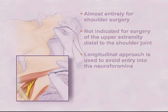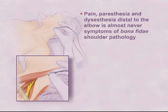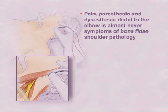It is important to realize that pain, paresthesia, and dysesthesia distal to the elbow is almost never a symptom of bona fide shoulder pathology. It almost always indicates an existing brachial plexitis, and great care should be taken in patients presenting with shoulder pain and pain distal to the elbow.